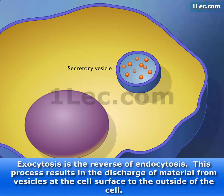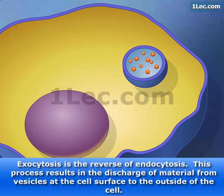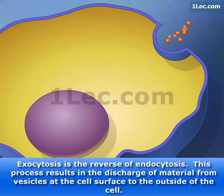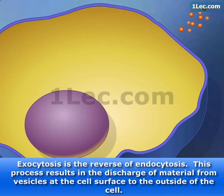Exocytosis is the reverse of endocytosis. This process results in the discharge of material from vesicles at the cell surface to the outside of the cell.